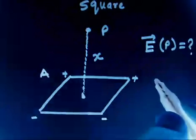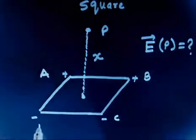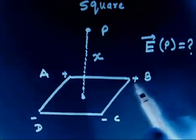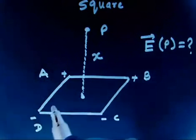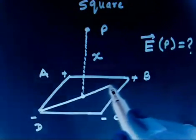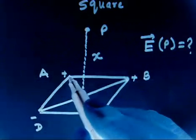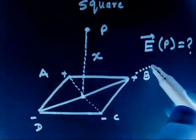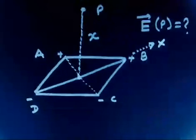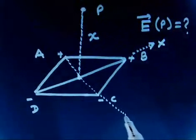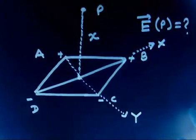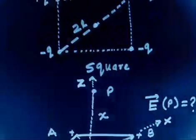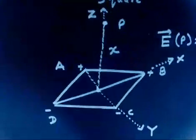Let us name the charges: vertex A, vertex B, vertex C, vertex D, and the point is P. We set up a coordinate system: x-axis, y-axis, and z-axis. The z-axis goes perpendicular to the plane of the square, so the point P is along the z-axis at coordinate (0, 0, x).